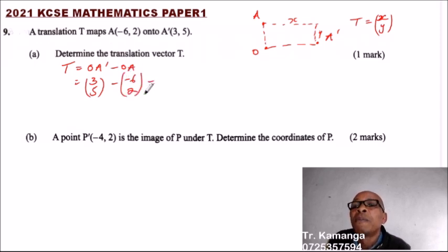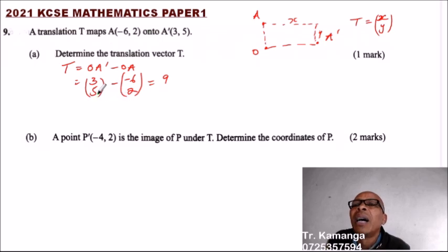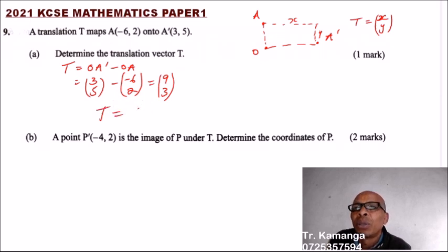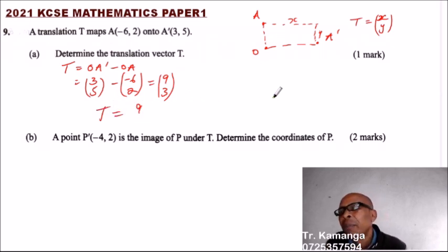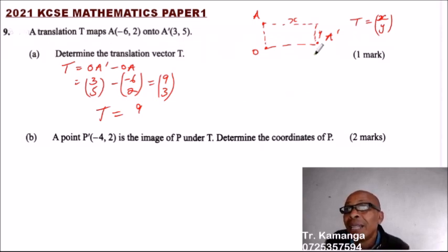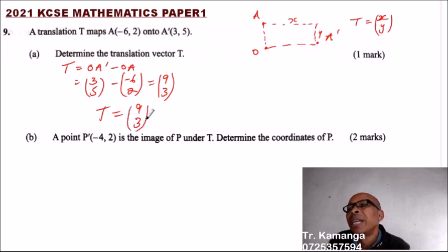So T equals (3, 5) minus (-6, 2): that is 3 minus (-6) equals 3 plus 6 equals 9, and 5 minus 2 equals 3. So T equals (9, 3) — meaning you move 9 steps in the positive X direction and 3 units along the Y axis. That gives you one mark.